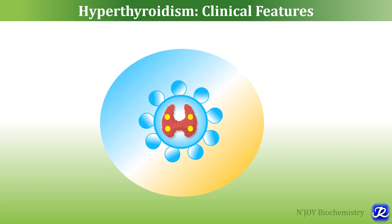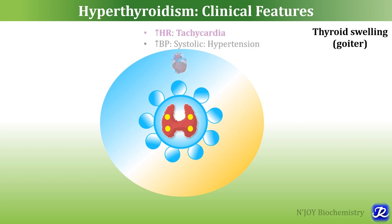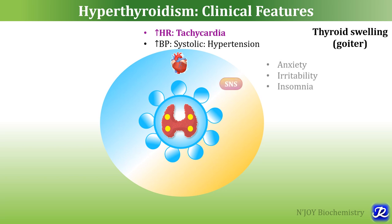The clinical features of hyperthyroidism are based on the effects of thyroid hormones on various organs of the body. The first important feature is thyroid swelling — goiter. As thyroid hormone increases heart rate, hyperthyroidism is associated with tachycardia as well as increased systolic blood pressure, resulting in hypertension. Thyroid hormones also affect the sympathetic nervous system — there is over-excitation leading to anxiety, irritability, and insomnia.